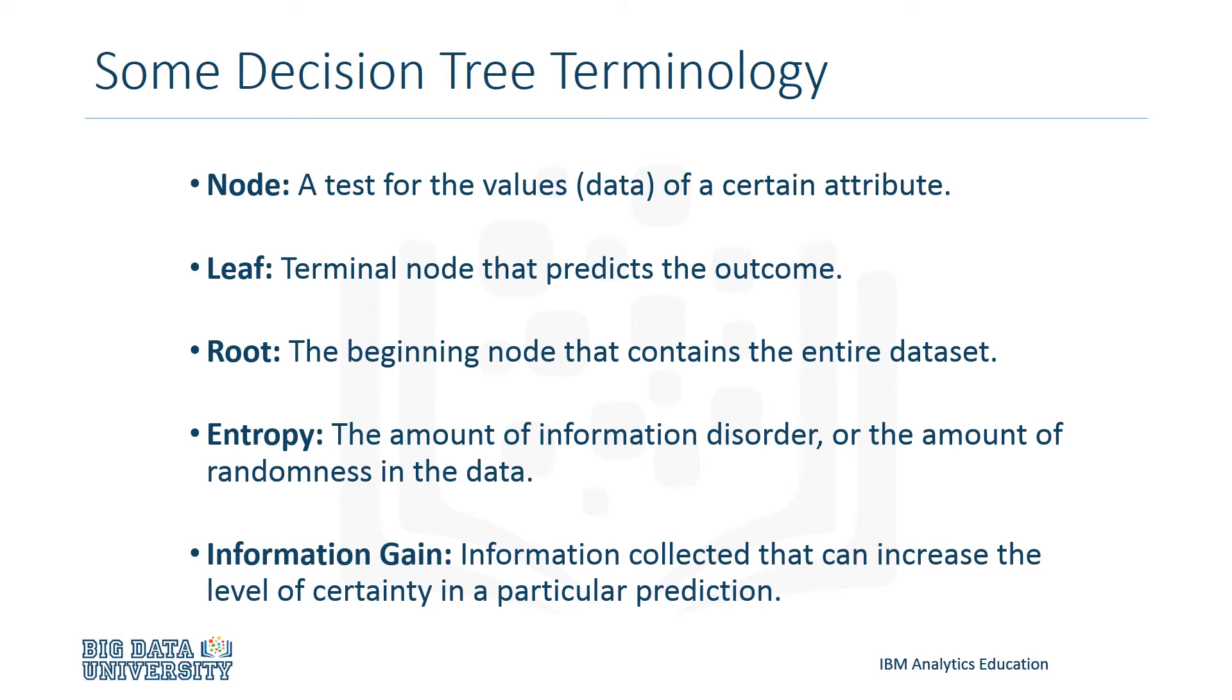Next, we have information gain. This is the information collected that can increase the level of certainty in a particular prediction. We can think of information gain and entropy as opposites. As entropy, or the amount of randomness, decreases,